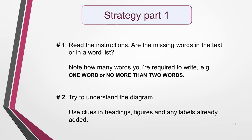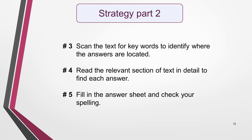Now we come to the strategy for answering diagram labelling questions. First, read the instructions carefully — find out whether you have to label a diagram with words from the text or from a word list, and if words come from the text, note how many you're required to write. Second, briefly look at the diagram and try to get a general understanding of what it's showing — there will be clues in headings, figures and any labels already added. Next, scan the text for keywords to identify where the answers are located. Then read the relevant section of text in detail to find each answer. And finally, fill in the answer sheet and check your spelling.